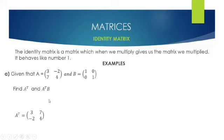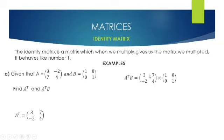Now we move on to our second step, which is finding the transpose of A multiplied by B, which will give us this matrix — the same matrix — as we're multiplying the transpose of A by an identity matrix. We'll go through all the steps in this example.